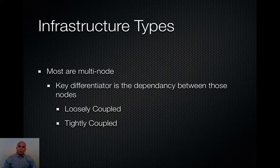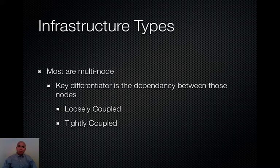In a tightly coupled relationship, each node needs the other nodes to be there. The data is scattered across the nodes. This is helpful to increase performance and increase scalability, but you do have this interdependent relationship between the nodes. It's something to explore as far as the differences between the two and see what makes the most sense for your organization.